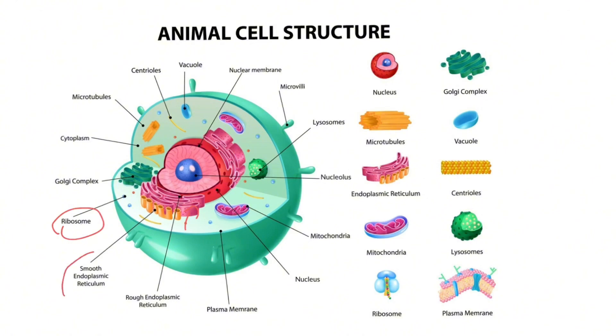The other ER which appears smooth due to lack of ribosomes on it is called smooth endoplasmic reticulum.